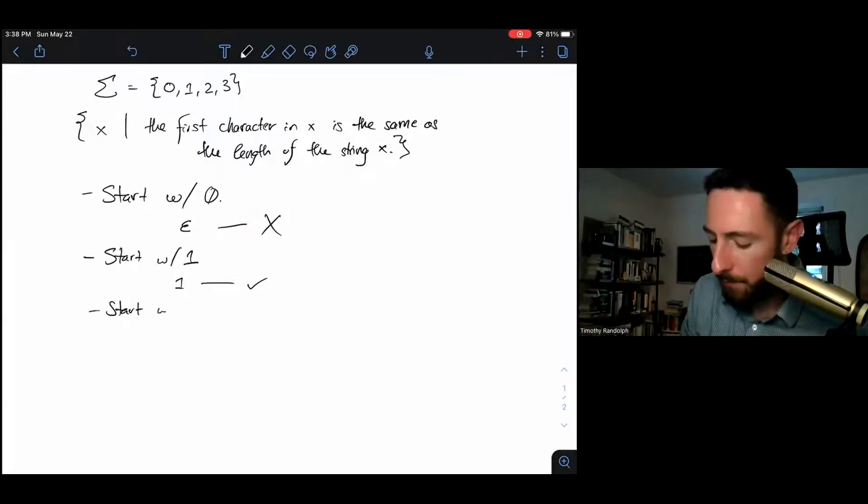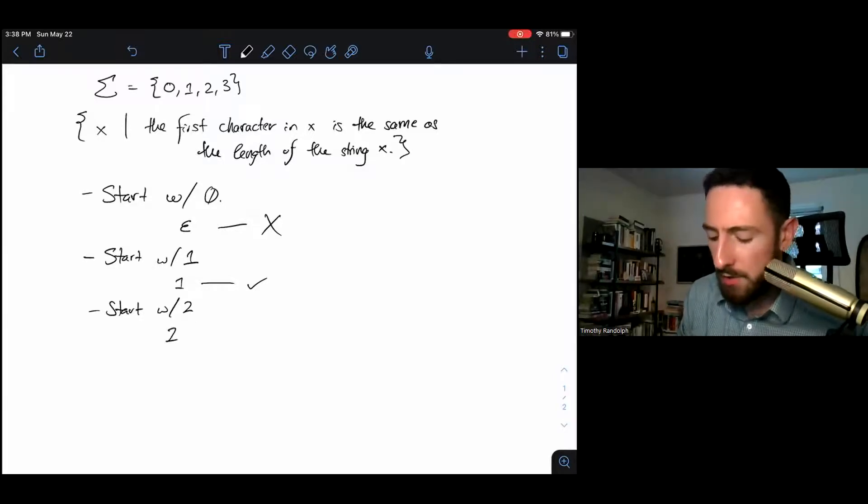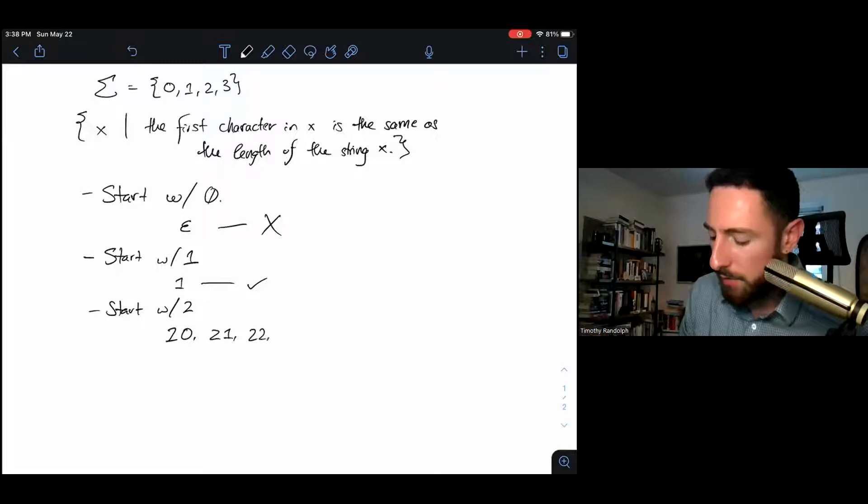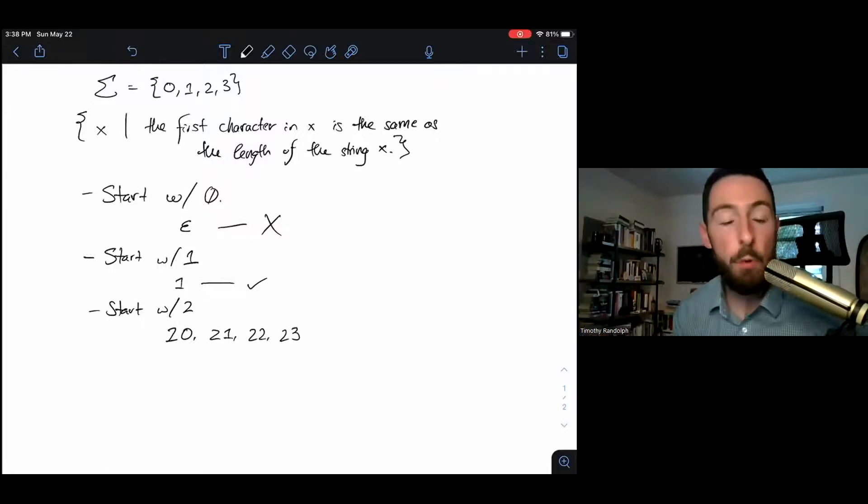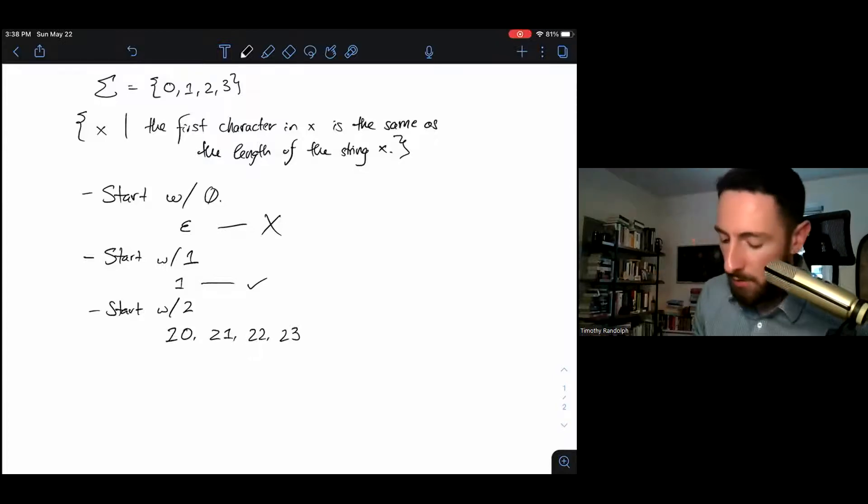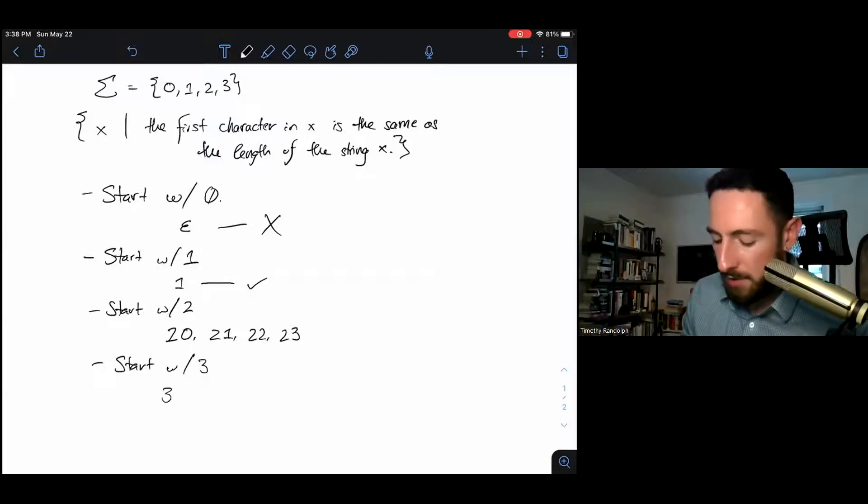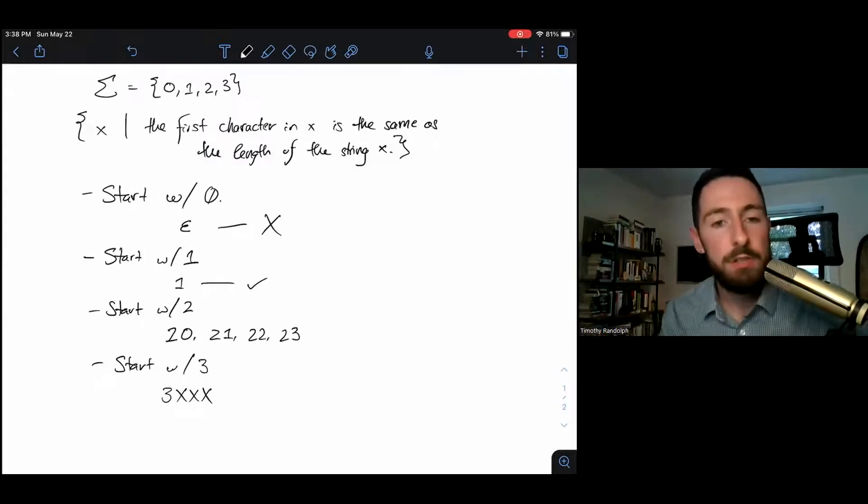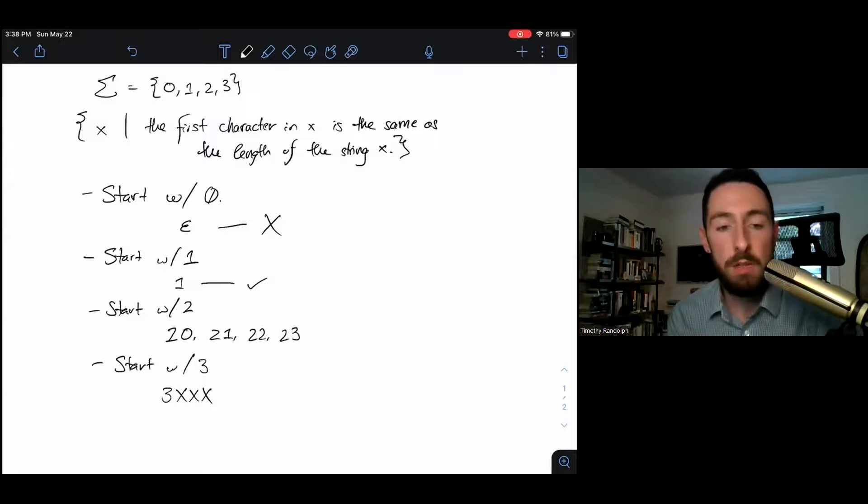If I start with two, I see now I've started to get some flexibility. I start with a two, and then I have to have exactly two characters in my string. So I could have 2-0, 2-1, 2-2, or 2-3. Those are the four strings over my alphabet that have exactly two characters and start with a two. And then now the pattern is pretty clear. If I'm looking for strings in my language that start with three, it'll be any string that starts with a three and then has three other characters from my language. So now I've got a good intuitive sense of the strings I want to accept.